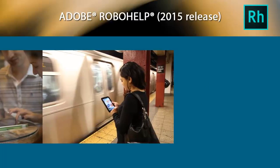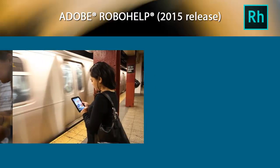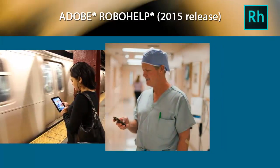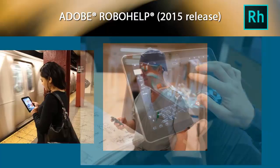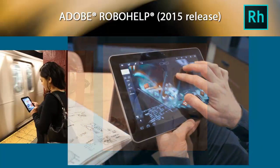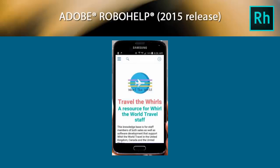Adobe RoboHelp authors provide content for audiences that are on the go. Technical communicators get more and more requests for delivering knowledge bases and help systems on mobile devices. Put your content on Google Play or iTunes, or distribute an Android APK file for local installation on the phone or tablet device directly. The 2015 release of Adobe RoboHelp makes it super easy.